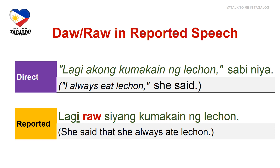Take a look at this first sentence: 'Lagi akong kumakain ng lechon,' sabi niya. Lagi means 'always,' ako is 'I,' kumakain is 'eat' or 'eating,' lechon is a roasted pig, and sabi niya means 'he or she said.' So: 'I always eat lechon, she said.' This is direct speech because we put the exact words of the speaker in speech marks. To switch to reported speech, remember the daw and raw rule — lagi ends with i, so we use raw.